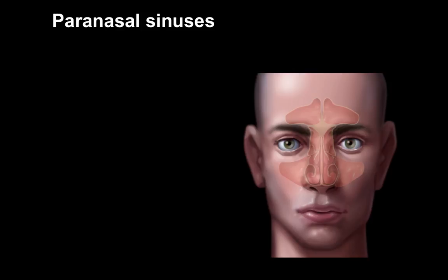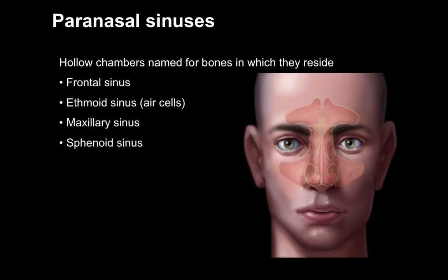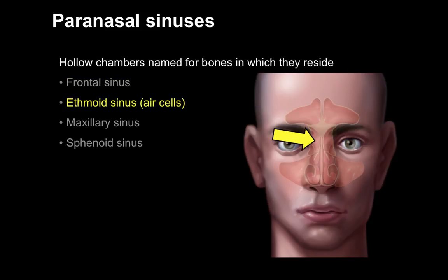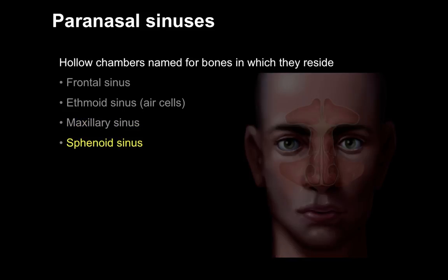Our paranasal sinuses are hollow chambers named for the bones in which they reside. There's the frontal sinus, which is a paired hollow chamber within the frontal bone. The ethmoid sinus, also called ethmoid air cells, has anterior, middle, and posterior chambers of honeycomb-looking sinuses within the ethmoid bone. The maxillary sinus flanks the nasal cavity — it is below the orbit and above the maxillary teeth. The sphenoid sinus is not visible in this view.